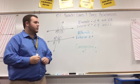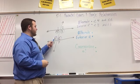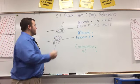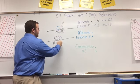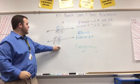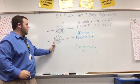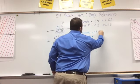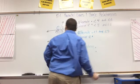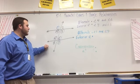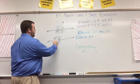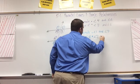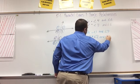Now for alternate exterior angles — they're opposite the transversal just like alternate interior but on the outside of the parallel lines. The first pair is angle 1 and angle 7, and the second pair is angle 2 and angle 8.